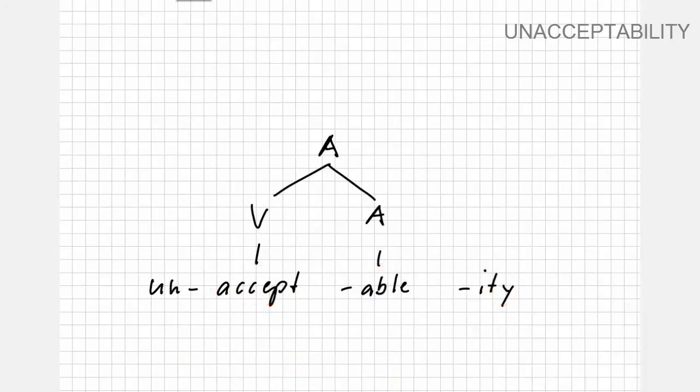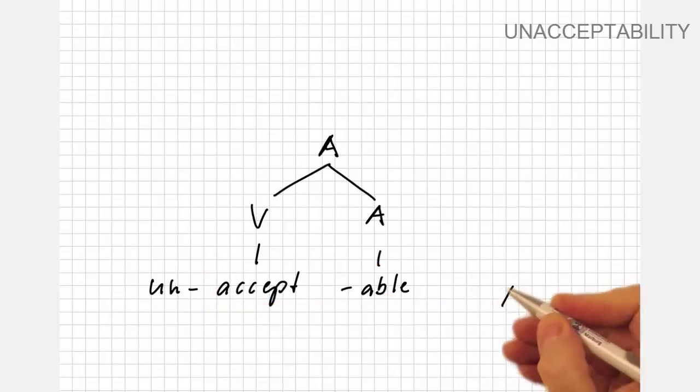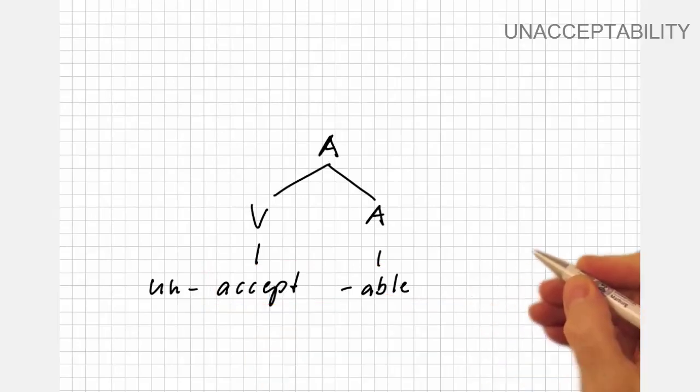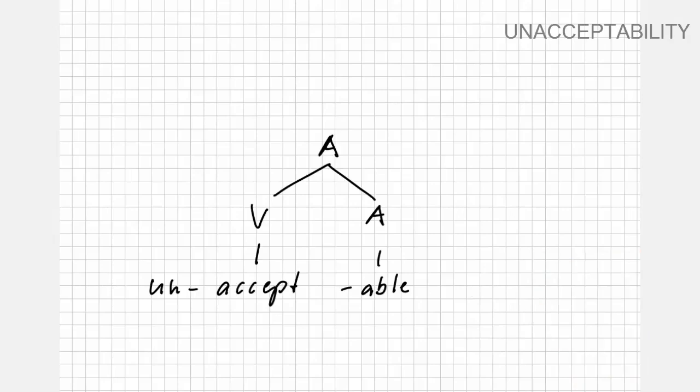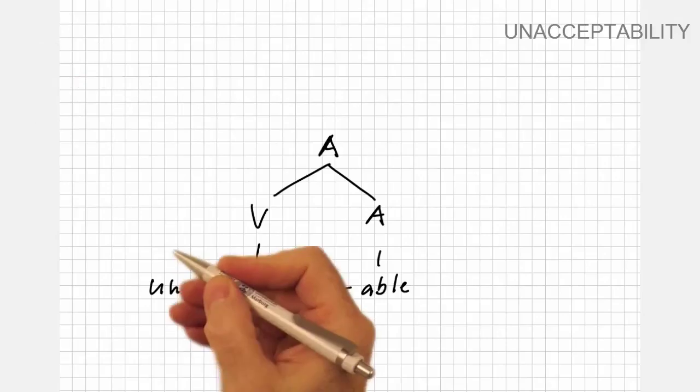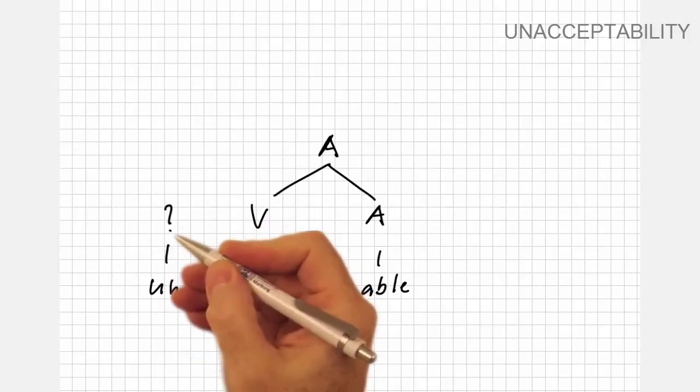Let's show option one first and attach the prefix un-, which, like many other present-day English prefixes, can precede many elements: verbs such as undo, adjectives like unhappy, and even nouns, as we will see in a second. So it has no inherent word class, and we label it with a question mark.